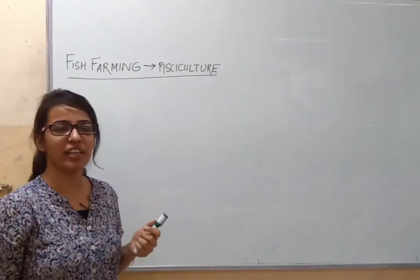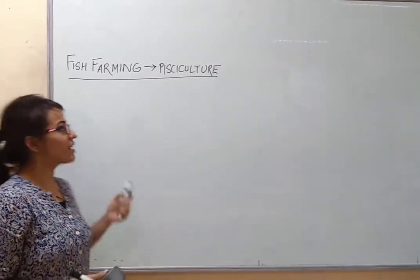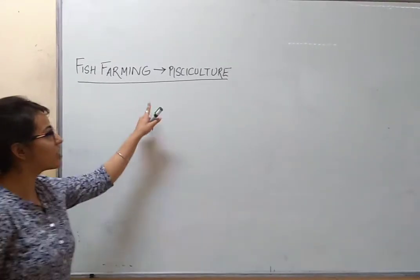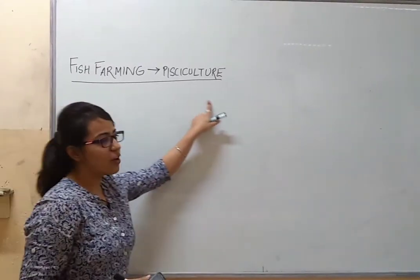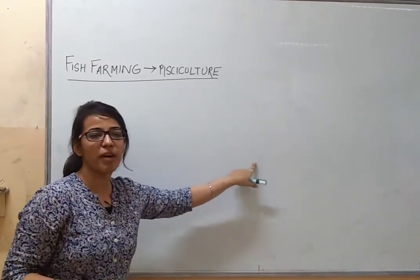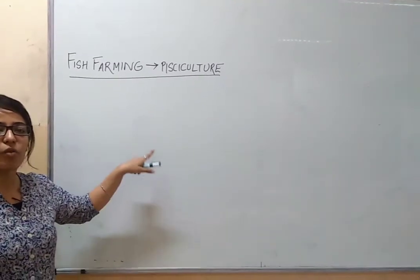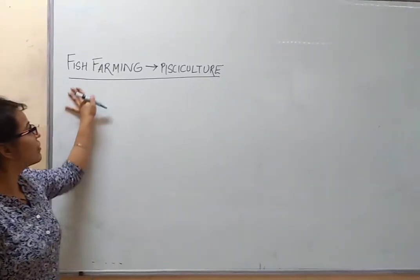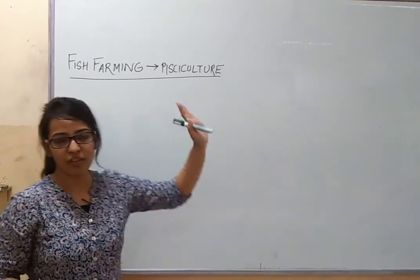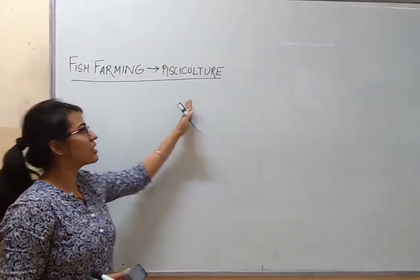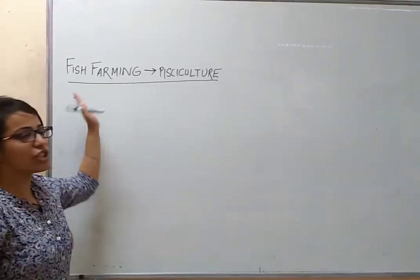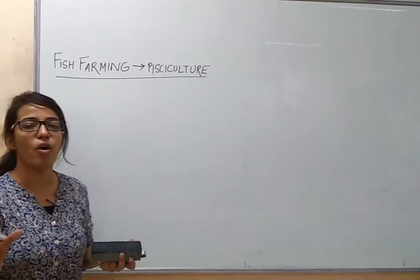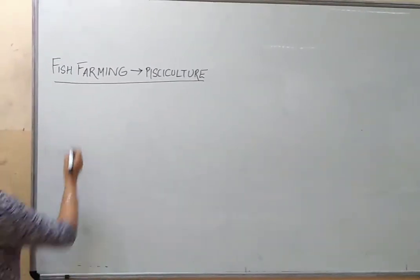Today's topic is Fish Farming. The scientific term is Pisciculture. We have all heard about dairy farming and organic farming, but this is something very different. As the name suggests, pisciculture is actually a culture of fishes. It is a very principled form of aquaculture.